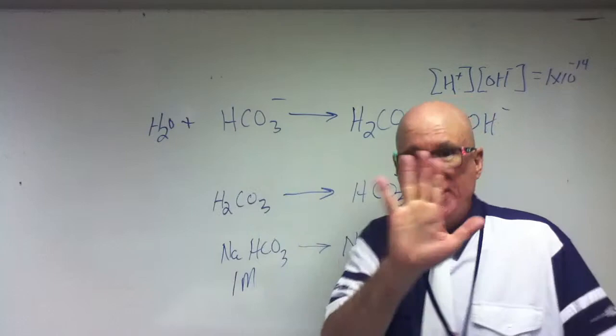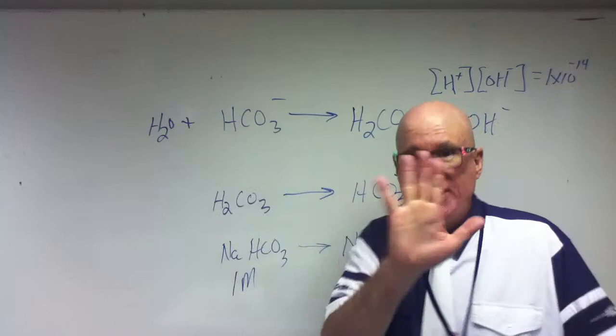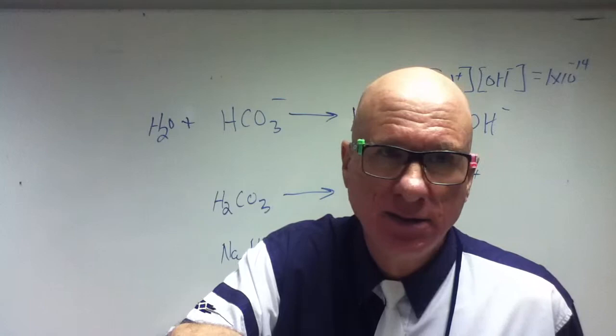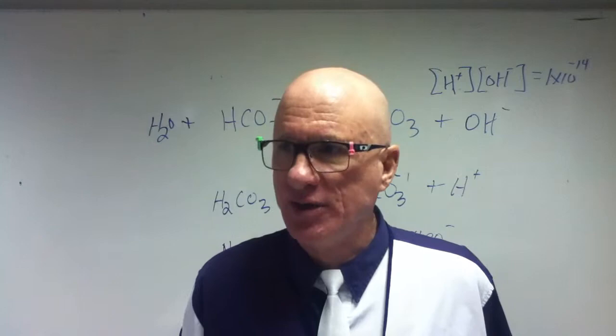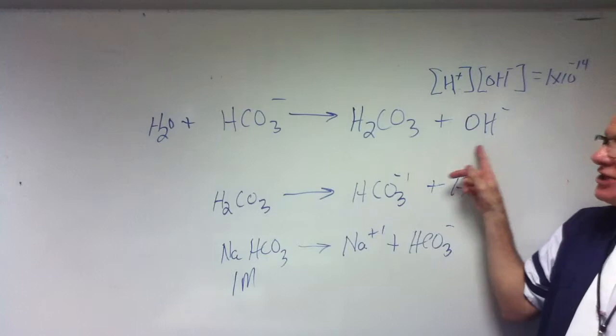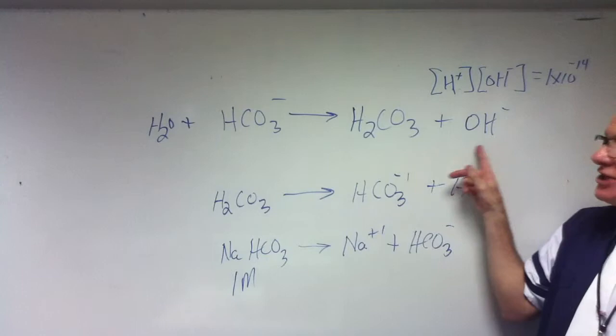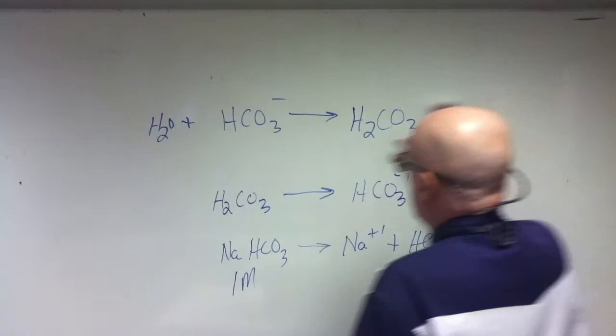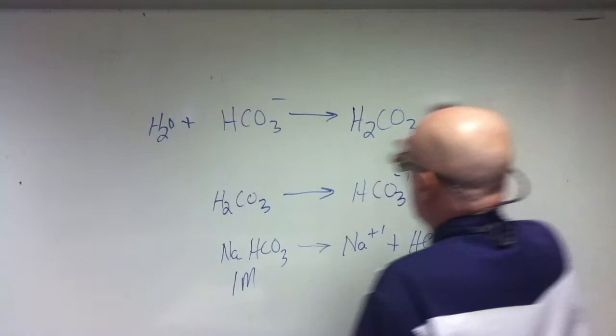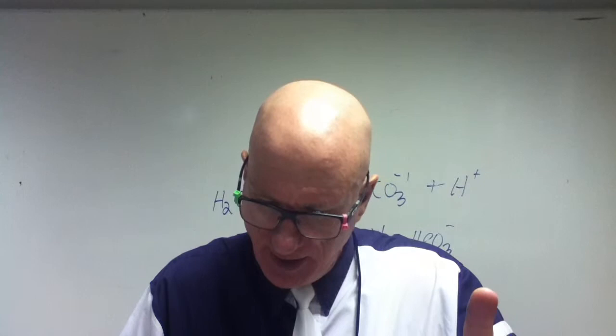What is it right now? It's a Brønsted-Lowry — according to this equation, is this a Brønsted-Lowry acid or base? It's a base, because what's it doing? Is it accepting a proton? Yes. Is it a Brønsted-Lowry base or acid? Base. So what's the conjugate acid? Carbonic acid — H₂CO₃, the carbonic acid. Write the formula and name of the conjugate base given the Brønsted-Lowry acid.